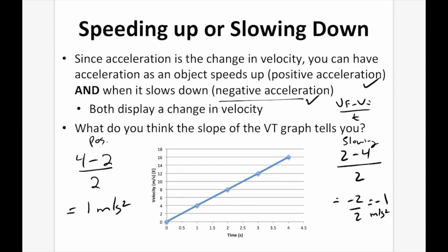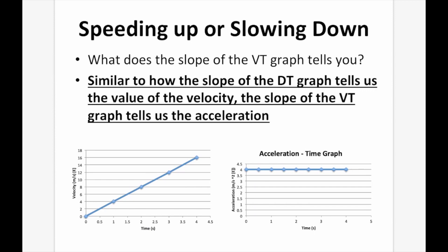The slope of the VT graph tells us the acceleration, similar to how the slope of the DT graph tells us velocity. For example, finding the slope between two points on the VT graph: rise = 4, run = 1, slope = 4. Between another pair of points: (8 − 4)/(2 − 1) = 4 again. We get a constant number because this is a constant slope. Therefore, the slope of the VT graph equals the acceleration shown in the AT graph.